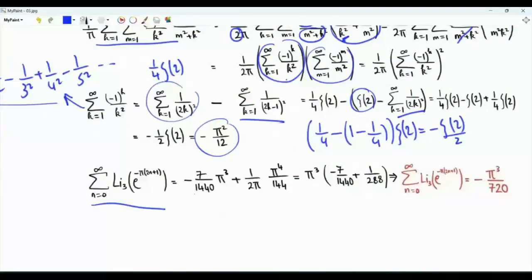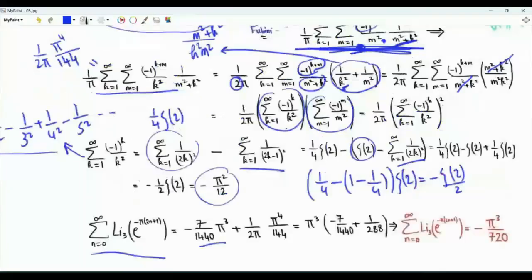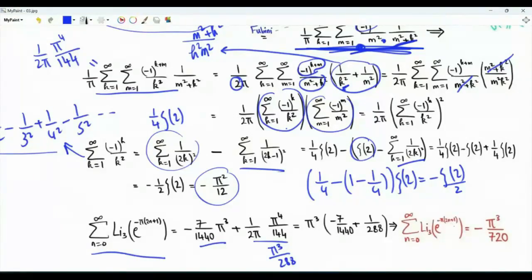Our sum of interest is −7π³/1440 plus π³/288. Combining these two terms, the final result is that the sum of interest equals −π³/720.